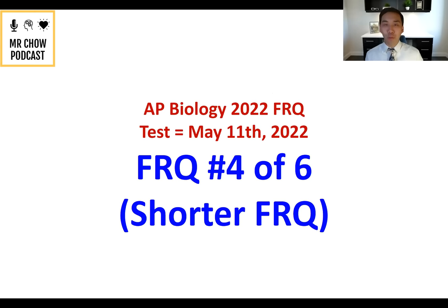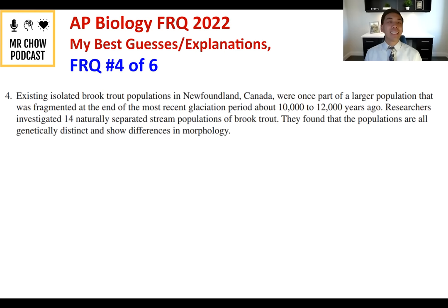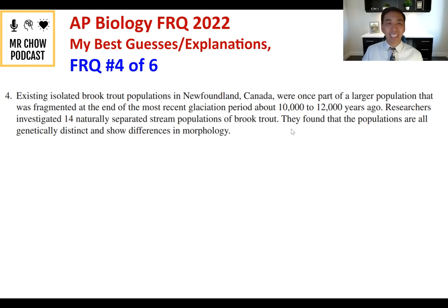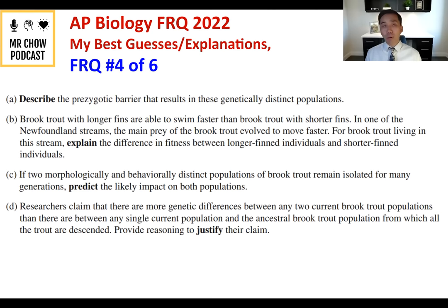FRQ number four. Existing isolated brook trout populations in Newfoundland, Canada were once part of a large population fragmented at the end of the most recent glacial period, about 10,000 to 12,000 years ago. Researchers investigated 14 naturally separated stream populations of brook trout and found the populations are all genetically distinct and show differences in morphology.